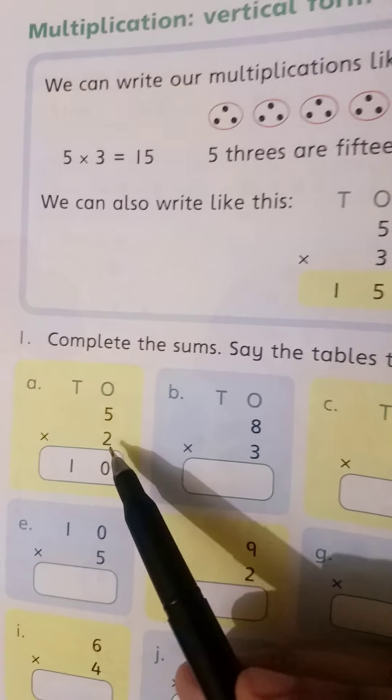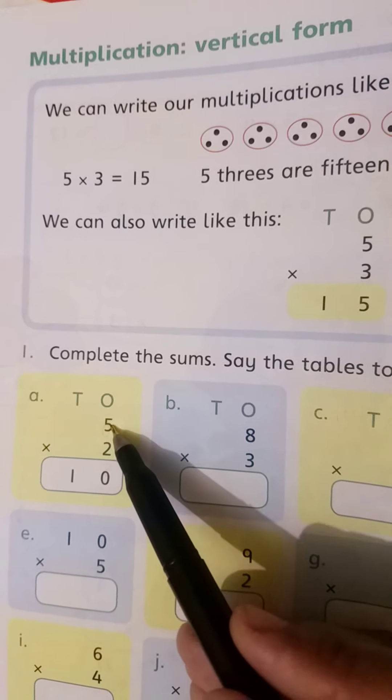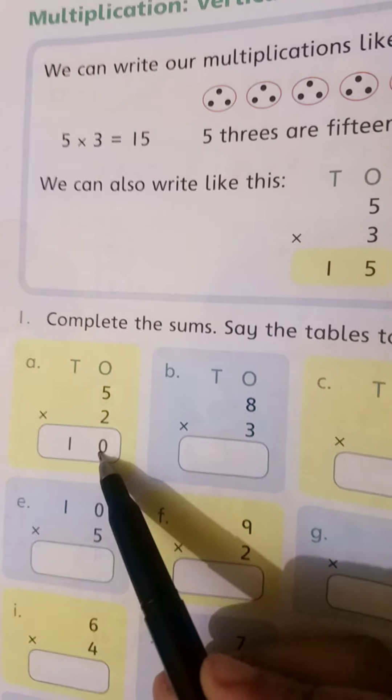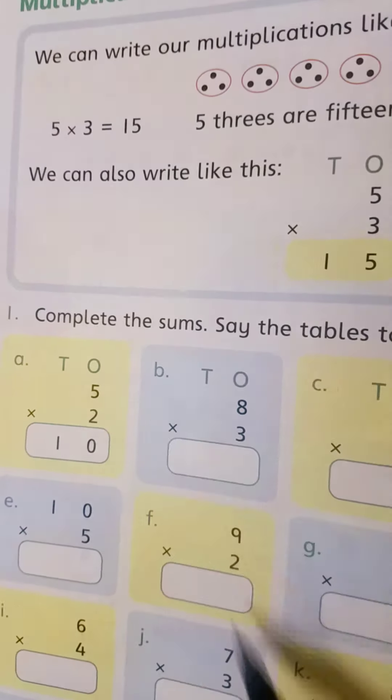2 times 5 is 10. 2 5's are 10, or 5 2's are 10. This is the multiplication sign. Write 10: 0 at 1's place and 1 at 10's place. Complete page number 56.